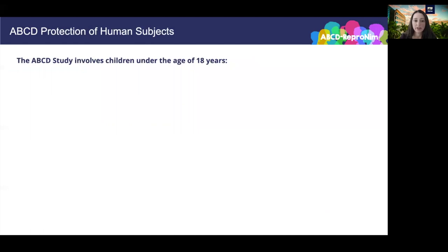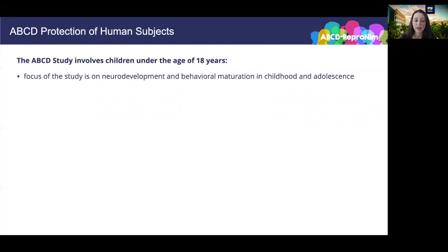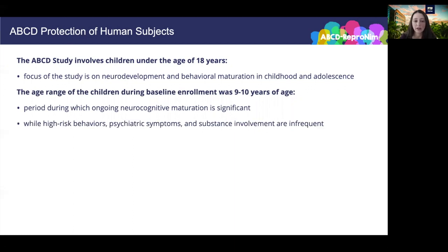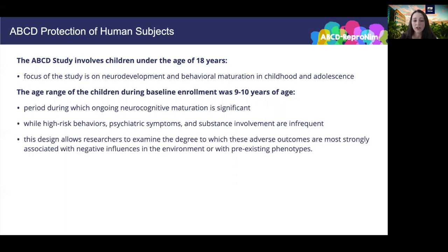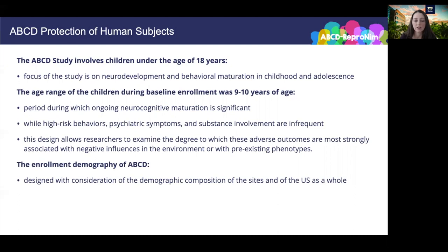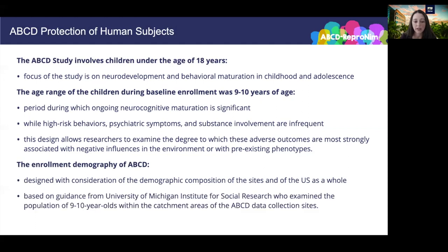Now I'll be talking about the protection of human subjects in research. The ABCD study involves children under the age of 18, justified by the focus of the study on neurodevelopment and behavioral maturation in childhood and through adolescence. The age range of children enrolled at baseline were 9 to 10 years of age, corresponding to a period during which ongoing neurocognitive maturation is significant while high-risk behaviors, psychiatric symptoms, and substance involvement are frequent. This design allows investigators to examine the degree to which adverse outcomes are most strongly associated with negative influences in the environment or with pre-existing phenotypes. The enrollment demography of ABCD was designed with consideration of the demographic composition of the sites and of the U.S. as a whole, and no gender, racial, or ethnic groups were excluded.